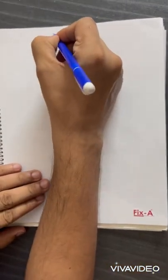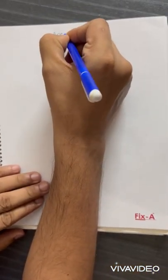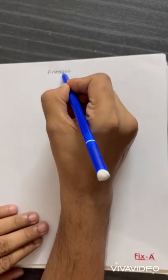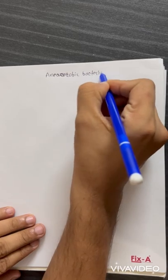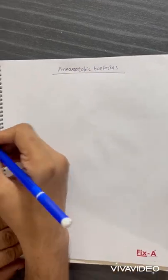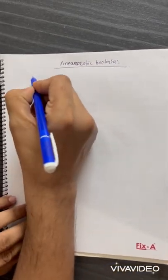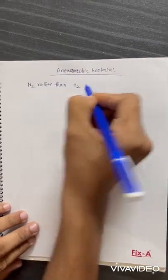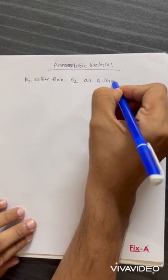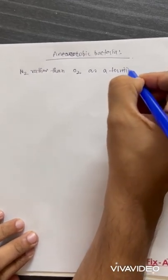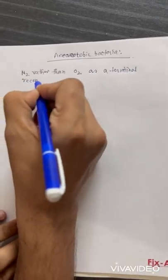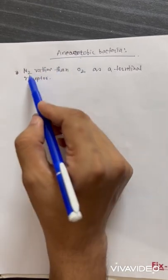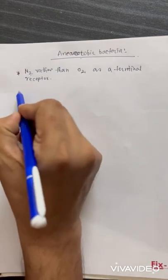Today we are going to discuss anaerobic bacteria. In anaerobic bacteria, they use nitrogen rather than oxygen as a terminal receptor. Other bacteria use oxygen as a terminal receptor, but anaerobic bacteria use nitrogen as a terminal receptor.